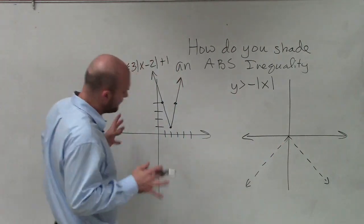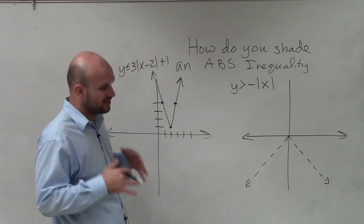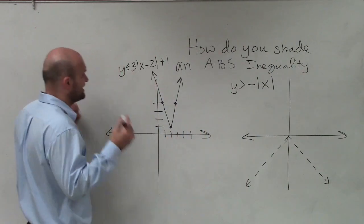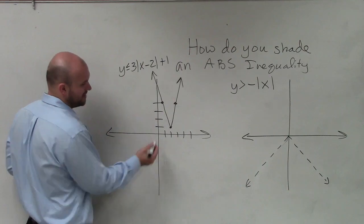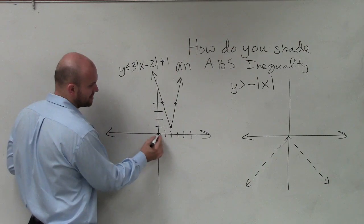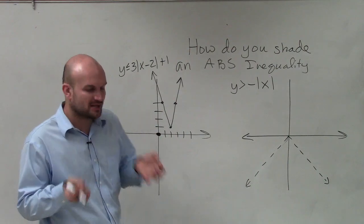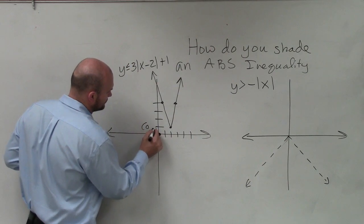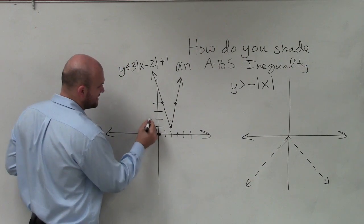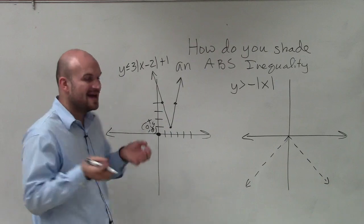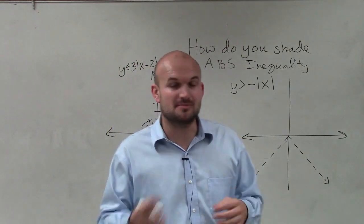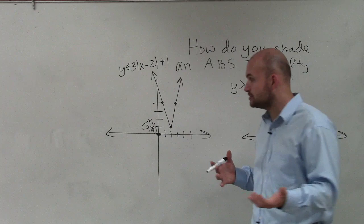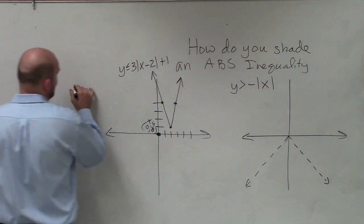Our main focus for today's video is really dealing with the test point. Basically, what we're going to do is choose a point at random. I think the best test point to always choose is the point (0, 0). We're going to take that test point, which has x and y coordinates, and plug it into our equation — substitute it in for the x and y values to determine if our equation is true or not at that point.